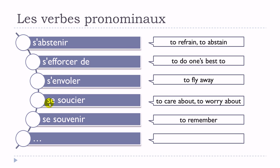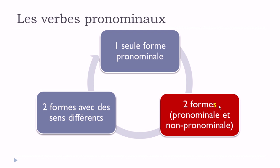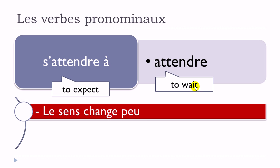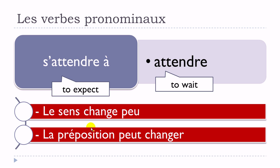Now the second situation: verbs that exist with or without se — pronominal et non-pronominal — and where the meaning is not really different. Let's take the verb attendre and the verb s'attendre à. S'attendre à means 'to expect', and attendre means 'to wait'. The meaning doesn't change that much — le sens change peu — though la préposition peut changer.